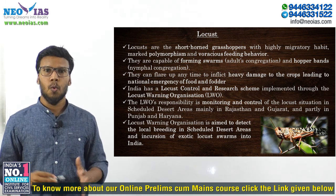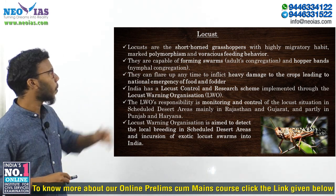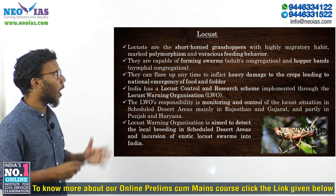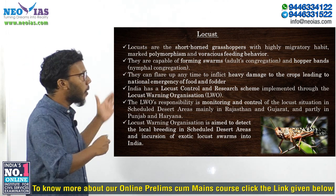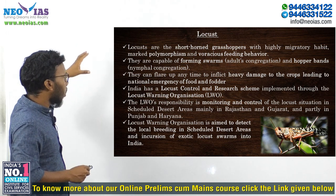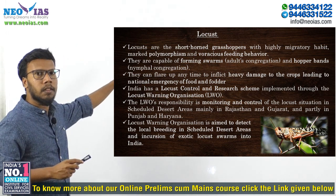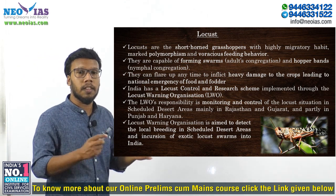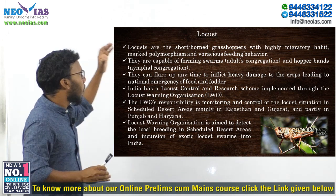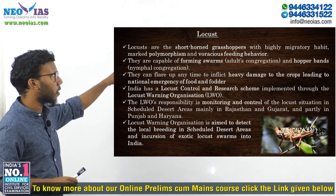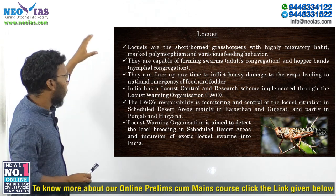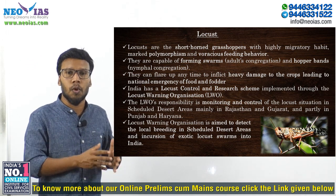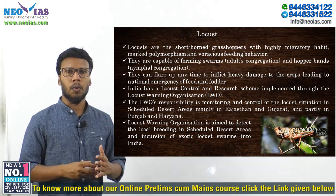As you can see in the picture, locusts are short-horned grasshoppers with a highly migratory habitat. They exhibit a phenomenon called polymorphism and display voracious feeding behavior. These are the key characteristics of locusts — short-horned grasshoppers with highly migratory habitat, marked with polymorphism and voracious feeding behavior. It is a kind of insect.